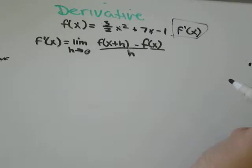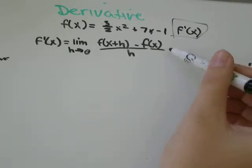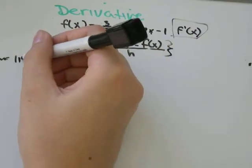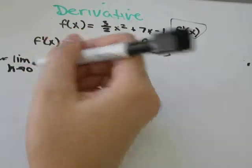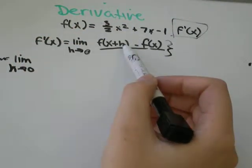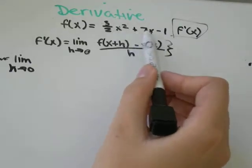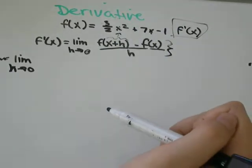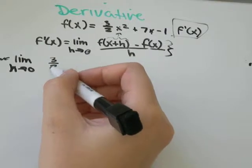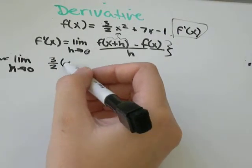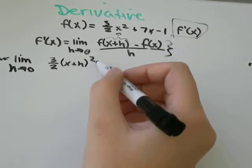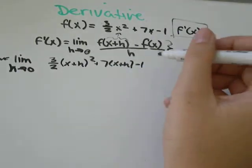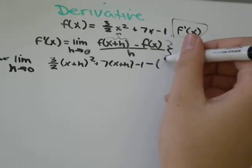So the first thing we're going to do is substitute everything we can into this formula. We've got the limit as h goes to zero of f of x plus h. We look at our original f of x and say anywhere we used to see x, now we see x plus h. So instead of 3 over 2x squared, we have 3 over 2 times x plus h squared, plus 7 times x plus h, minus 1, minus the original function. And so that's 3 over 2x squared plus 7x minus 1, all of that over h.